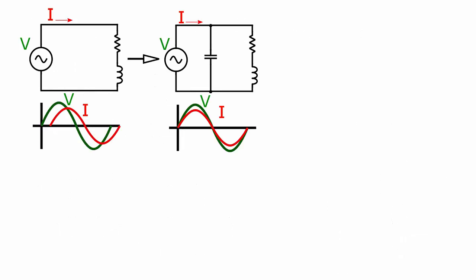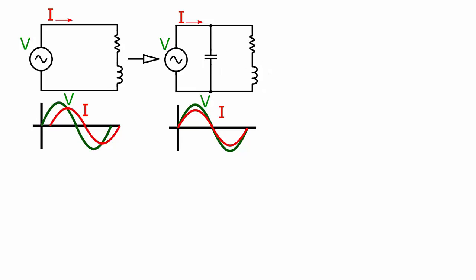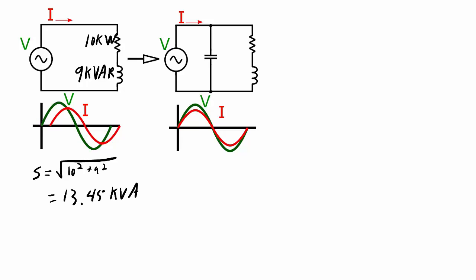At its most basic, power factor correction involves adding a reactive load to counteract the reactive load in the circuit. The inductor is the reactive load causing a low power factor, but by adding a capacitor, we can counteract the reactive power of that inductor. For example, if the resistor consumes 10 kilowatts of power and the inductor is 9 kVAR, the apparent power is the square root of 10 squared plus 9 squared, which equals 13.45 kVA, giving a power factor of 0.75.